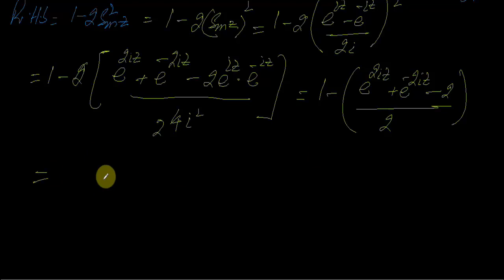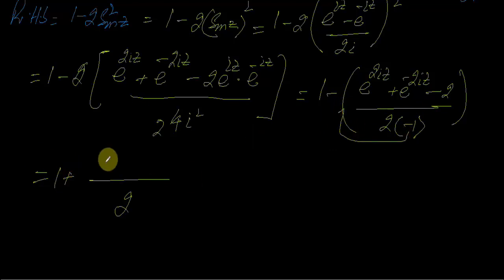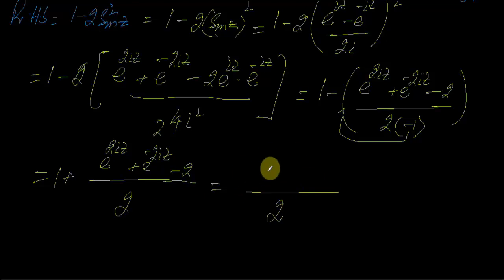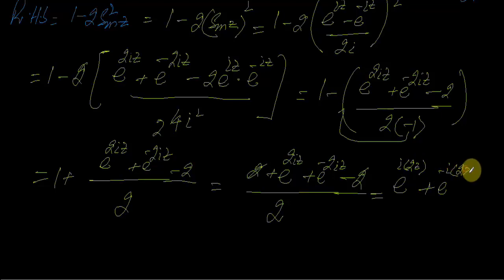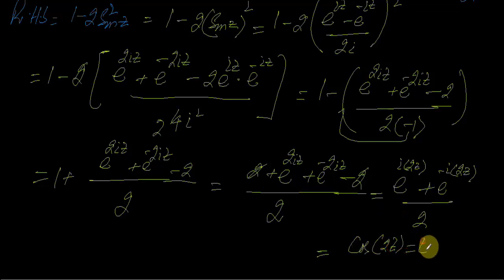Let's simplify this: with 2·iota·z, iota squared gives minus 1, this also simplifies, so here it will be plus 1. So 1 plus e^(2·iota·z) + e^(-2·iota·z) divided by 2. Once again you can see that this is equal to (e^(iota·2z) + e^(-iota·2z)) divided by 2, which is equal to cos(2z) — that is equal to left hand side.